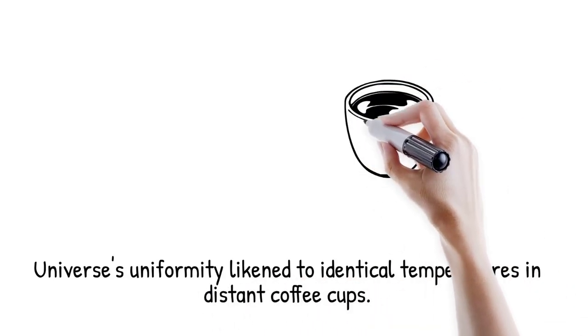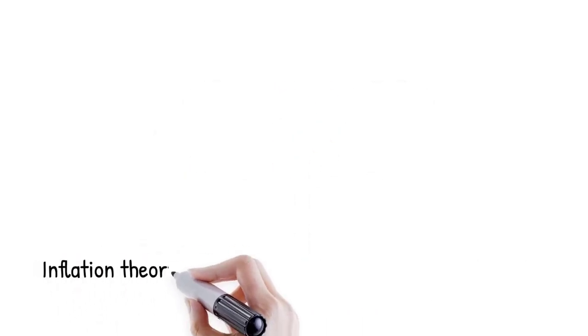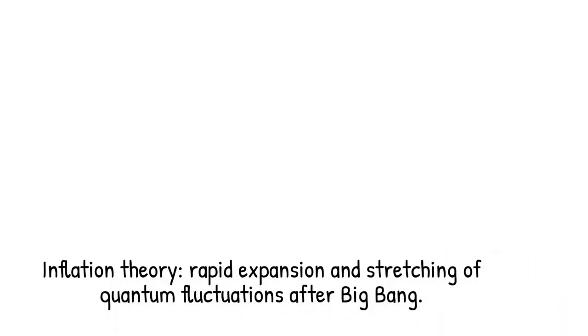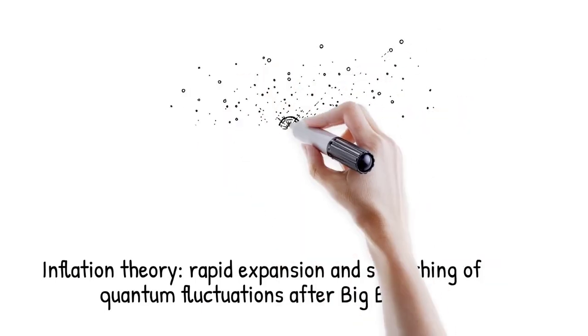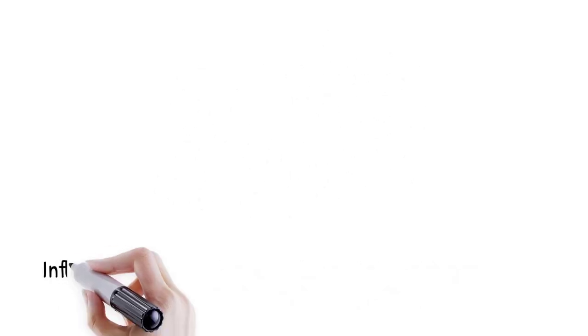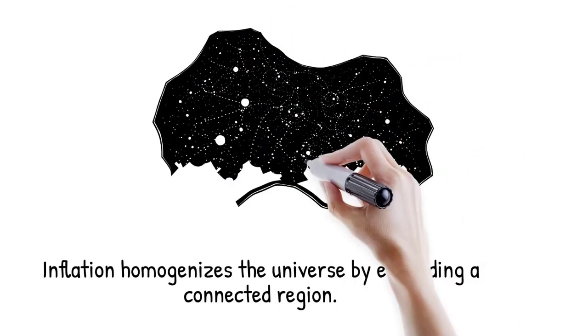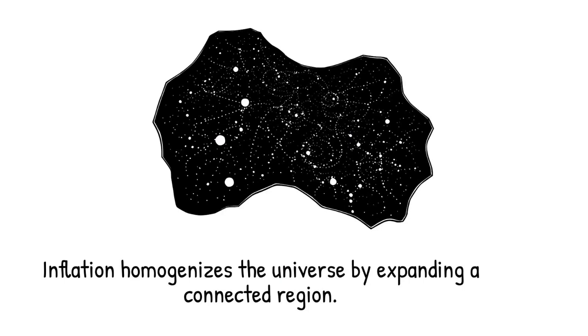Cosmic inflation proposes that a tiny region of space underwent exponential expansion in a fraction of a second after the Big Bang. During this inflationary period, quantum fluctuations were stretched across vast distances, imprinting the seeds of structure we see today. Because the entire observable universe originated from this once inflated patch, its properties were homogenized before inflation blew it up. This solves the horizon problem by allowing all regions to have once interacted. The rapid stretching explains why the universe now appears flat and smooth.